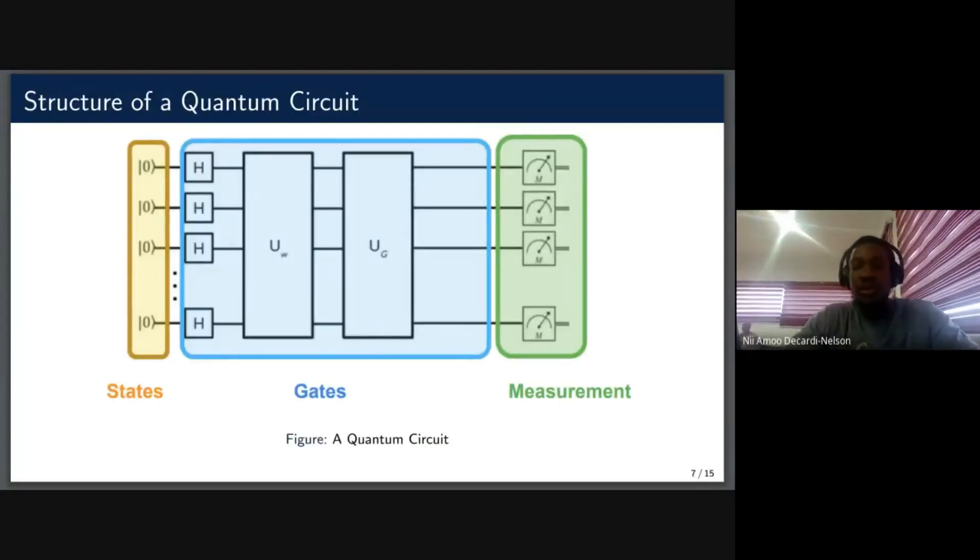So before we proceed to the quantum variation, I would want to give you a brief overview of how a quantum circuit looks like. So you have some initial states that are usually set to zero. So you have the ket zero. And then you have gates, which are a set of operations that will be acting on your initial gates. And then finally, at the end, you'd have measurements that would return the probabilities of you observing particular states at the end.